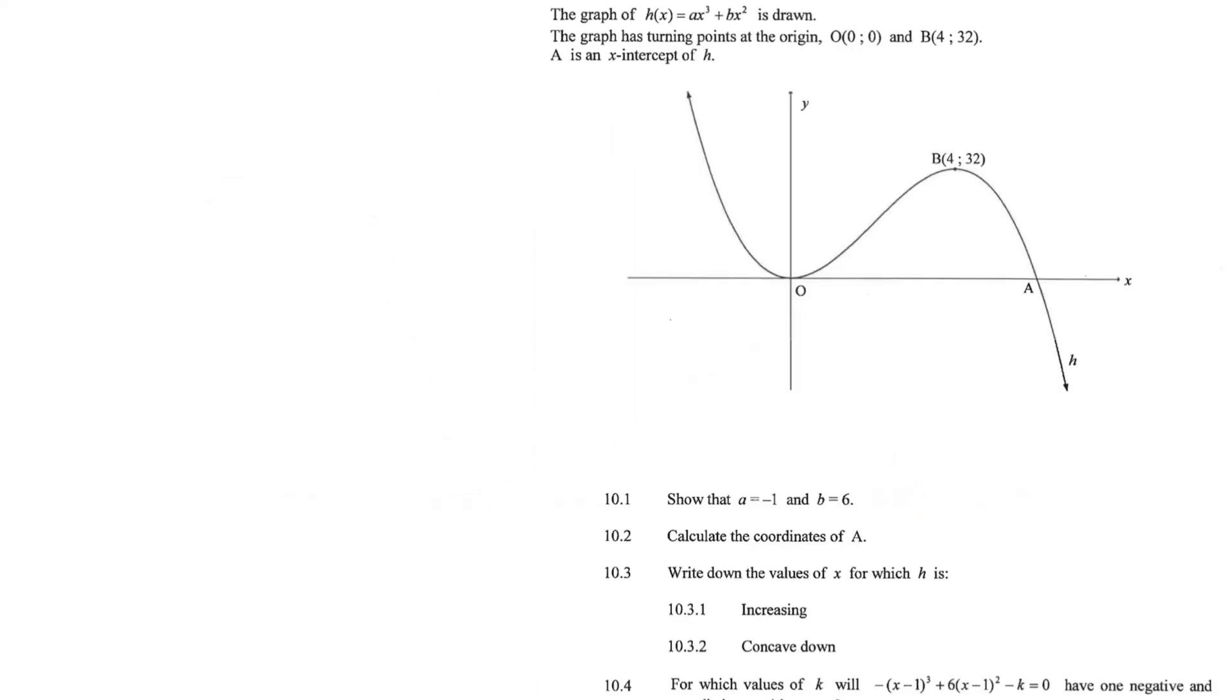10.1. Show that A is negative 1 and B is equal to 6. So we have H(x) as Ax cubed plus Bx squared, and we are going to use the point B to find the values of A and B.